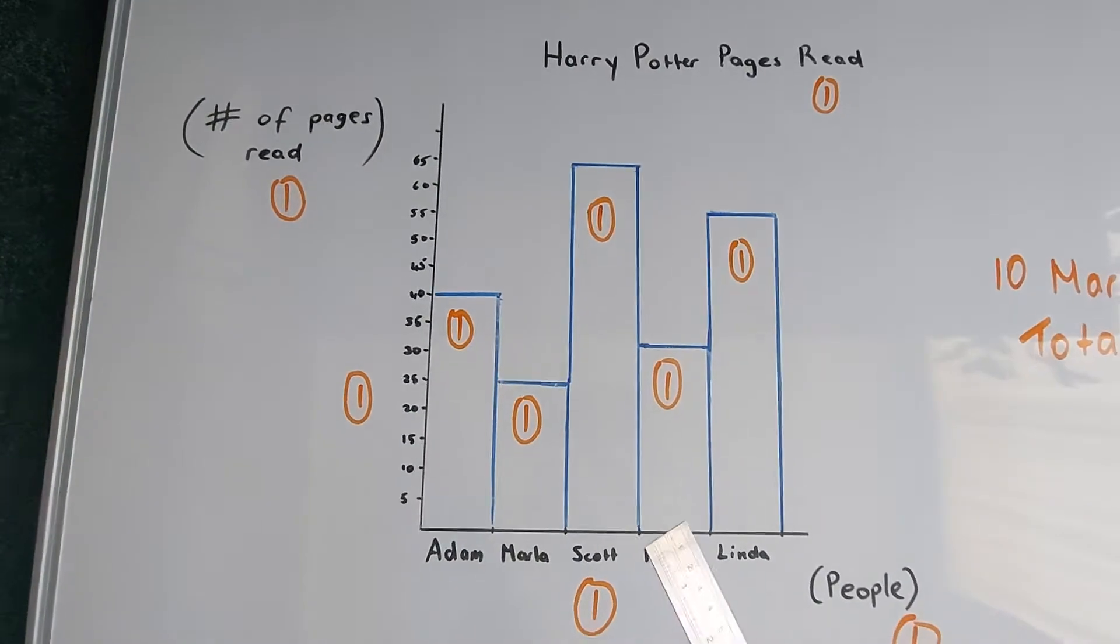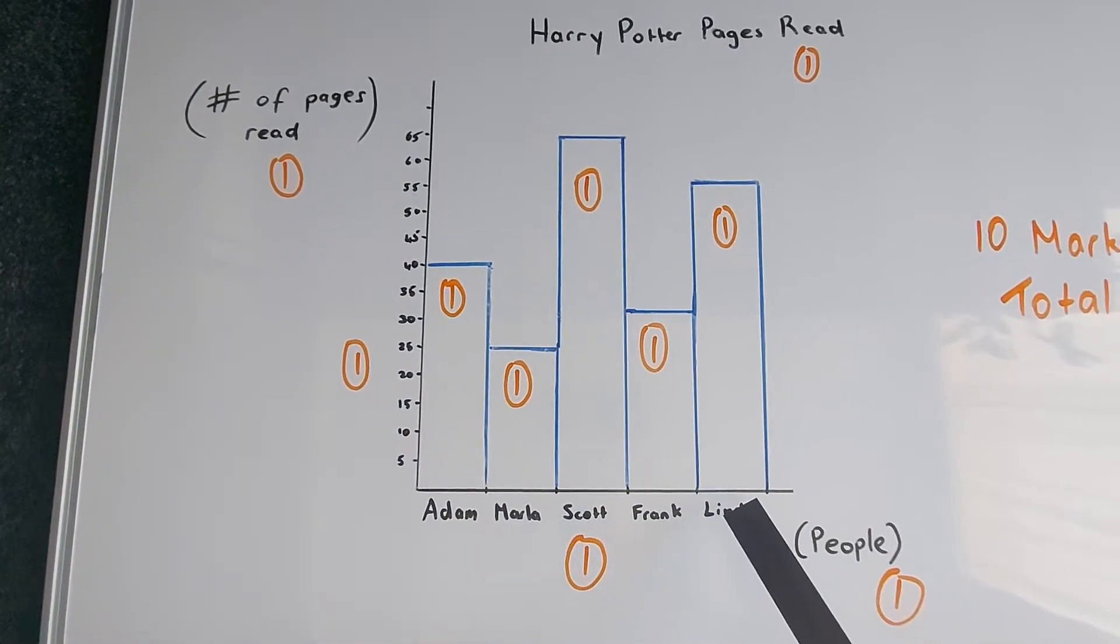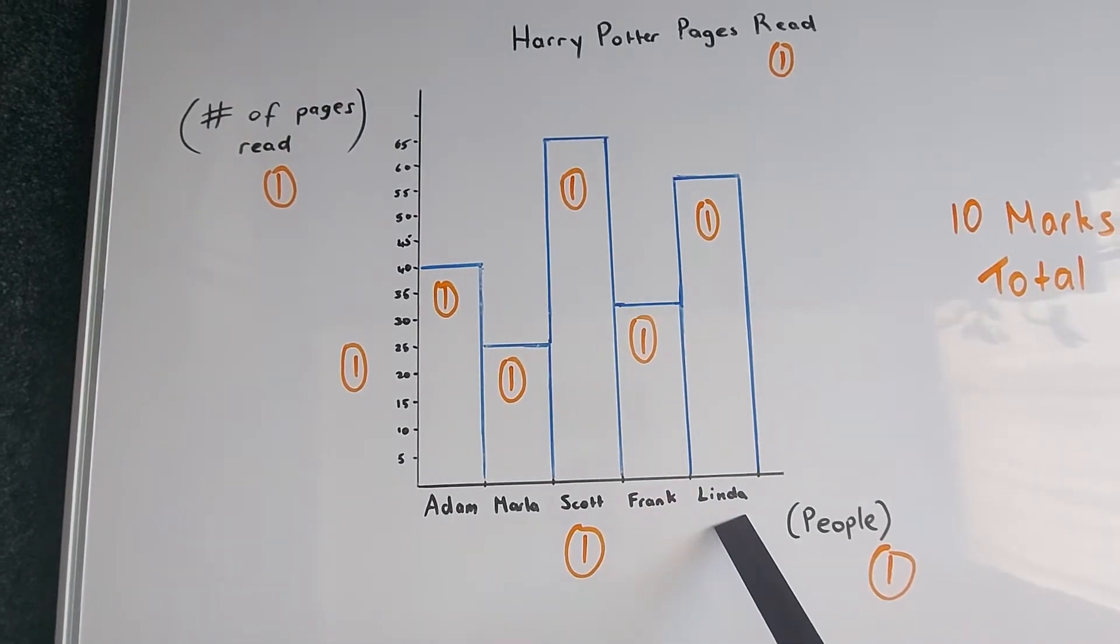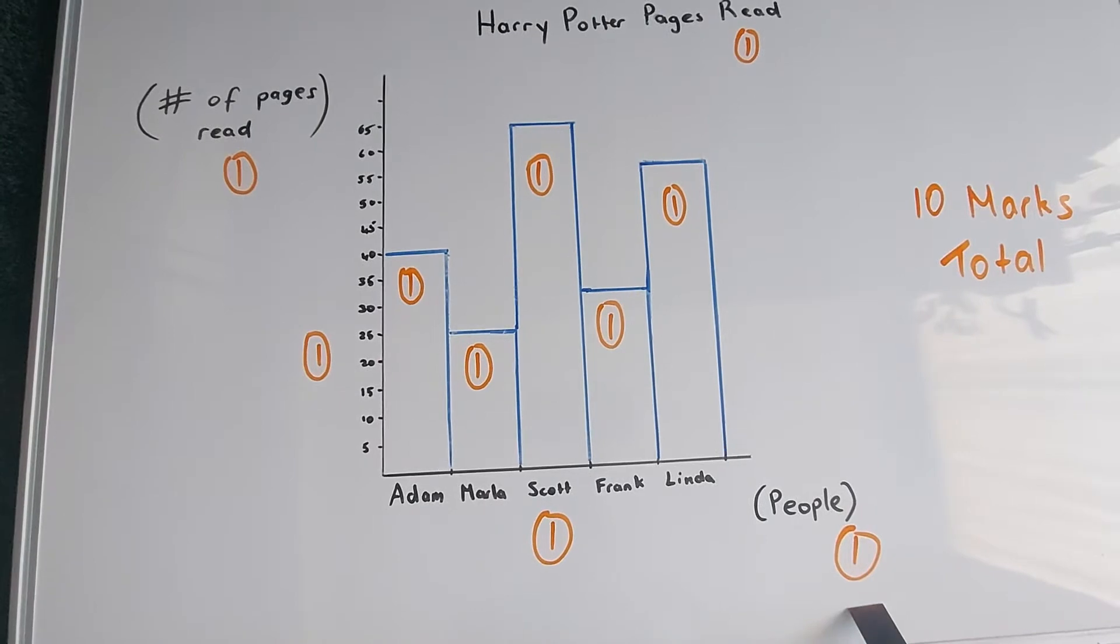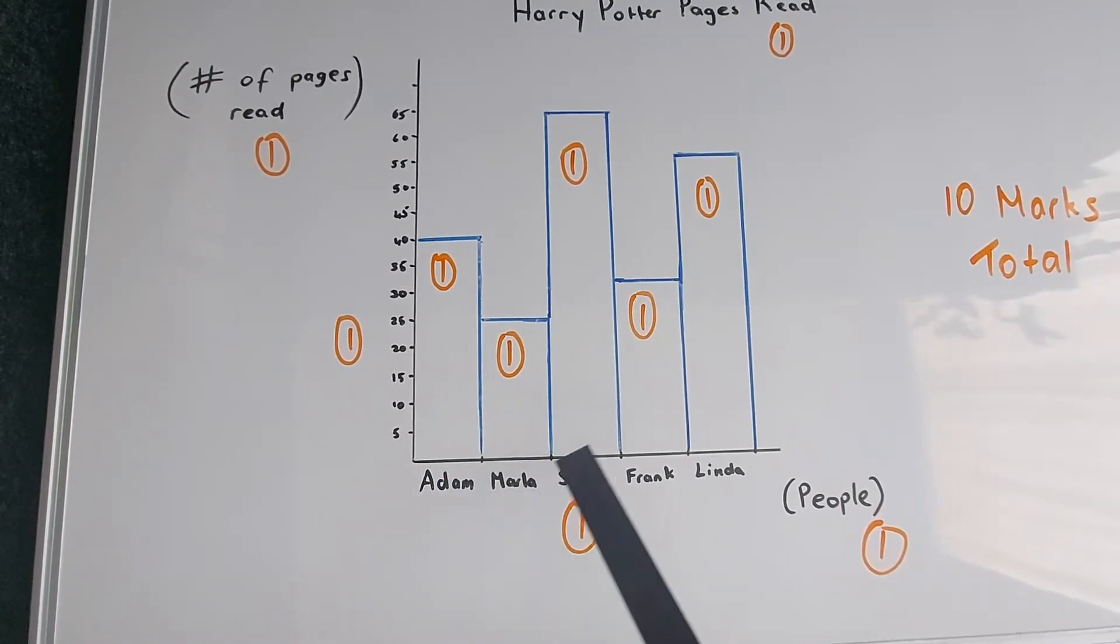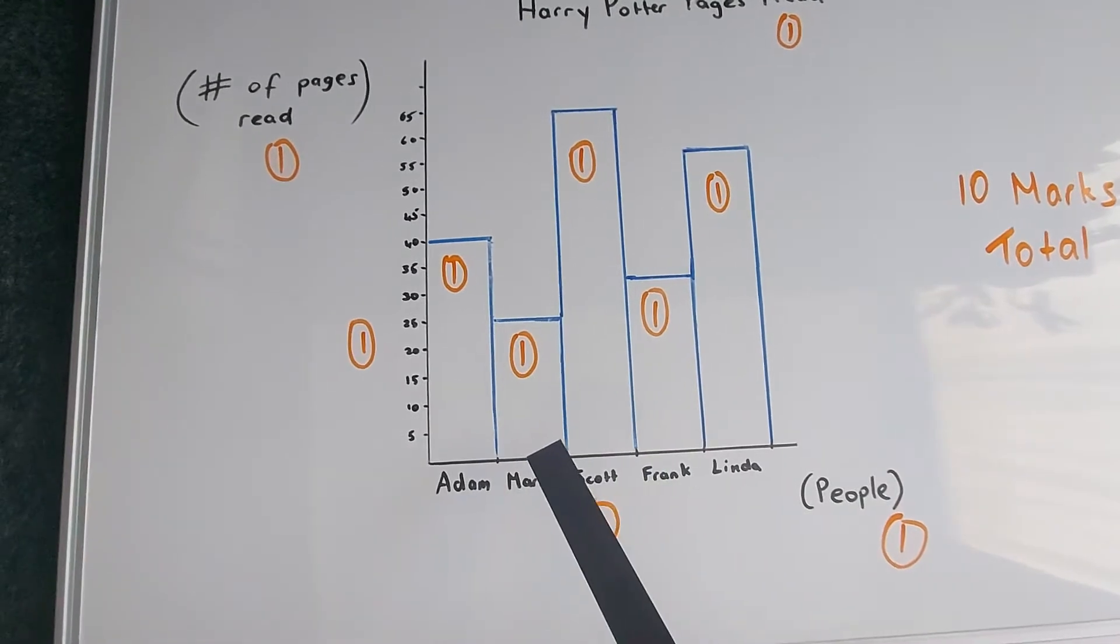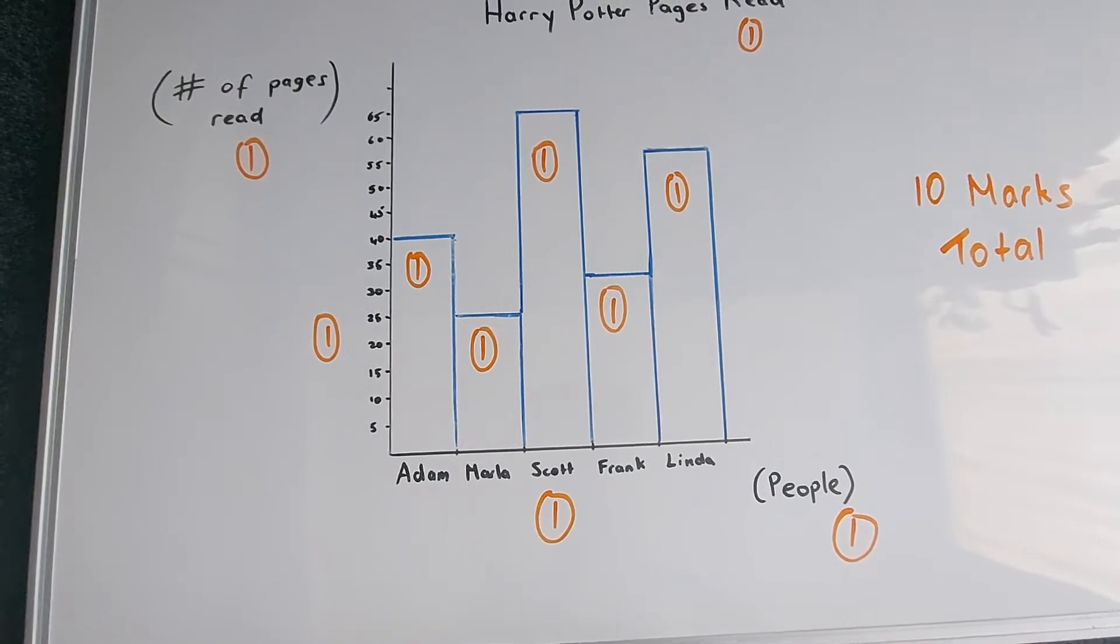Next, you'll probably draw the axes. So here I've got my y-axis, here is my x-axis. On the x-axis, I've labelled it as people, so that's worth one mark. And each of my people are evenly spaced within my graph. And the only way to do that is to make sure you're using a ruler.